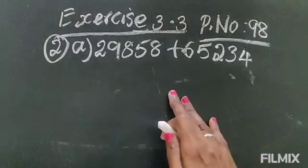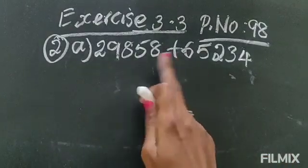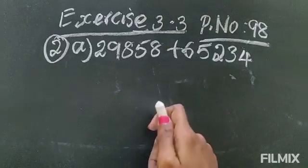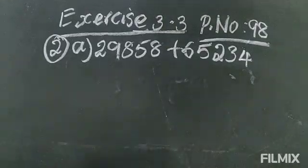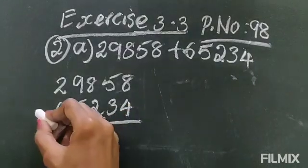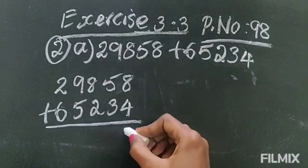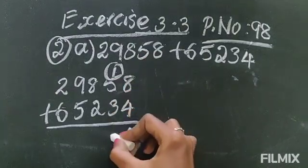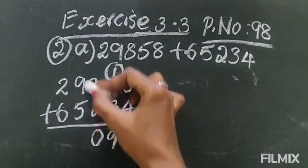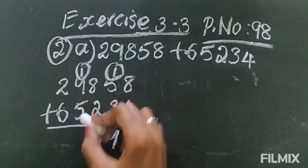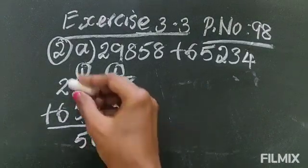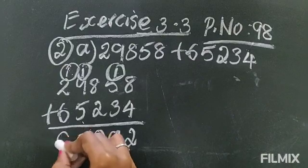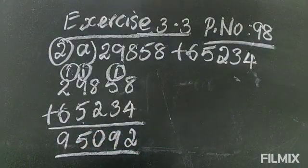This is from exercise 3.3, page number 98. You have to add this one — it is given: add the numbers and write two subtraction facts. So first you will add this number, then write the subtraction facts. I have arranged them in order. Let's add: 8 plus 4 is 12, so 2 you will write here, 1 you carry. 1 plus 5 is 6, 6 plus 3 is 9. Again 8 plus 2 is 10, so 0 you will write here, 1 you carry. 1 plus 9 is 10, 10 plus 5 is 15, so 5 you write here, 1 carry. 2 plus 1 is 3, 3 plus 6 is 9. So the sum is 95,092.